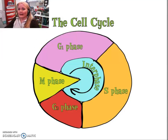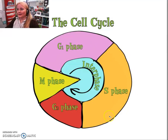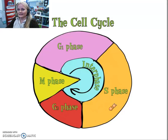We're going to be looking at the cell cycle. Looking at this diagram, can anybody tell me which part of this fancy diagram is mitosis? Which phase in the cell cycle represents mitosis? Good — the M phase. Pretty easy to remember because M stands for mitosis.